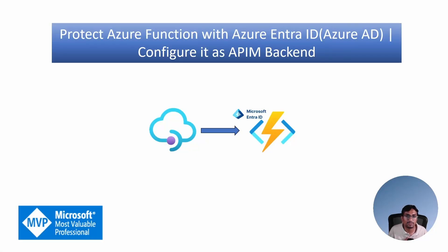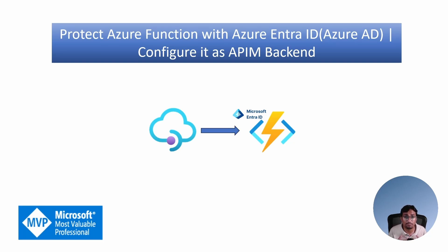Azure Function has become a code-to-serverless solution for many developers, allowing you to focus on your code while Azure handles the infrastructure. One of the key concerns when deploying any API is security. The easiest and most powerful authentication mechanism available in the Azure ecosystem is Azure AD authentication, now called Microsoft Entra ID. This is super simple and can be enabled without writing a single line of code. It lets you avoid managing complex secrets, seamlessly integrates with other Microsoft services, and you can implement role-based access controls through the Azure portal. This plug-and-play approach to security means you can focus on building your function's business logic rather than worrying about authentication.